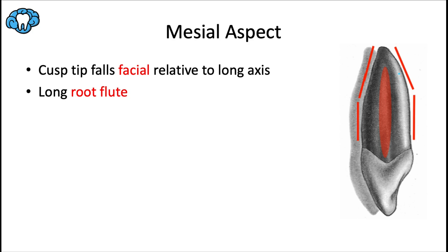From the mesial or distal aspect, this is a very important distinction: the cusp tip as well as the root apex fall facial to the long axis line. This is exactly opposite to the mandibular incisors, where the incisal edge falls lingual to the long axis, and for the maxillary incisors it fell on the long axis. There's also a notable root flute — a long, rounded linear depression in the root. All facial and lingual heights of contour for anterior teeth fall in the cervical third.